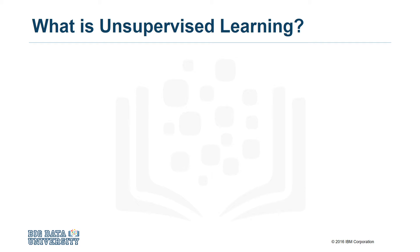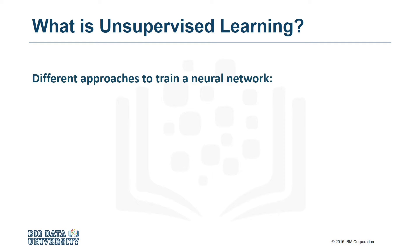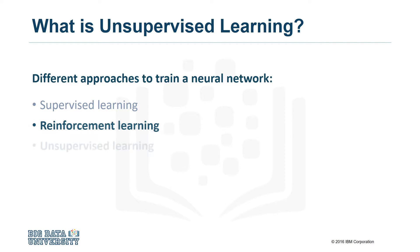Depending on the goals of the application, there are many different techniques for training a neural network. A few general categories are supervised learning, reinforcement learning, and unsupervised learning, which is the topic of this video.